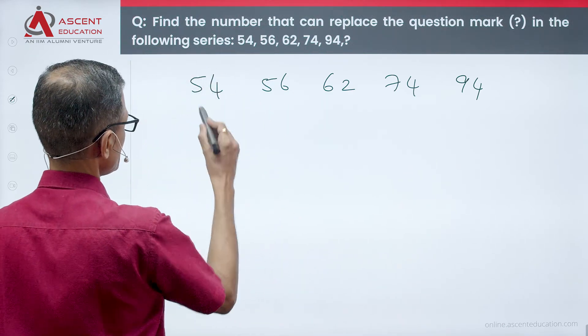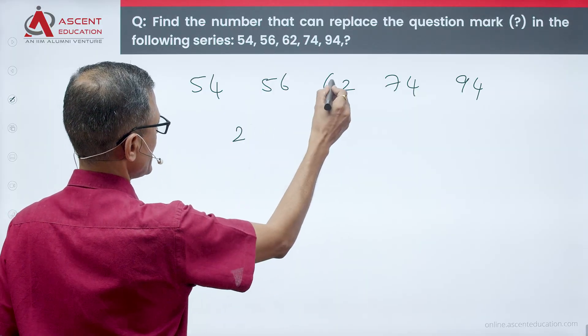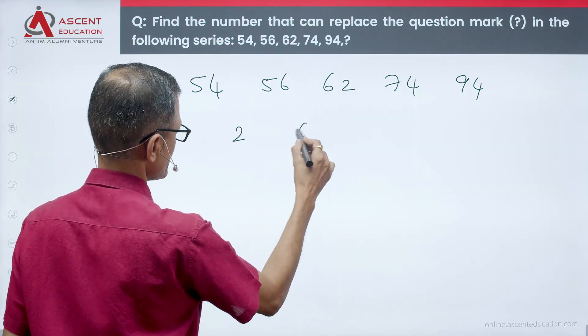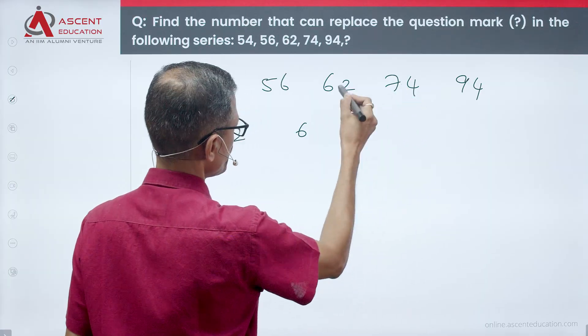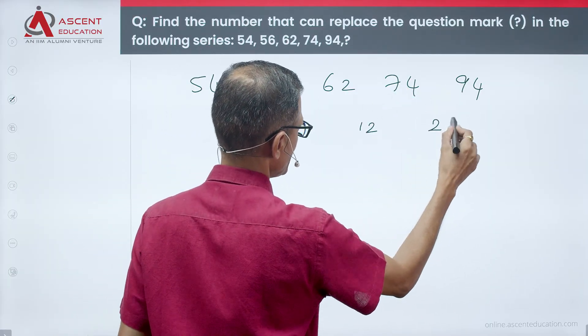There are two differences here. 62 minus 56 is 6. In this case, 74 minus 62 is 12, and then we have 20.